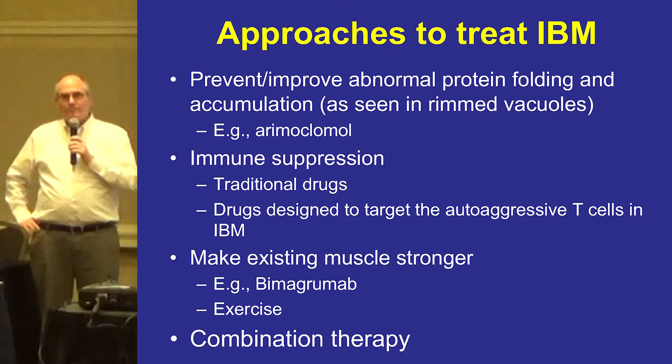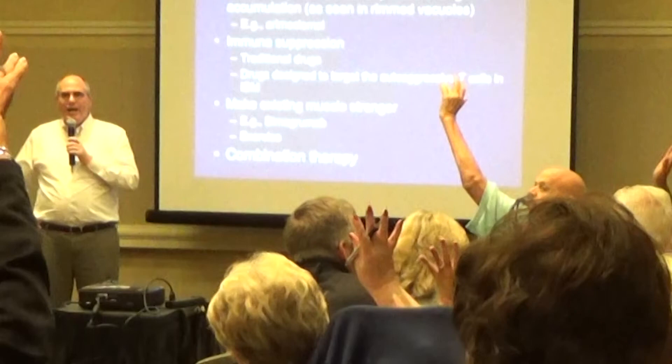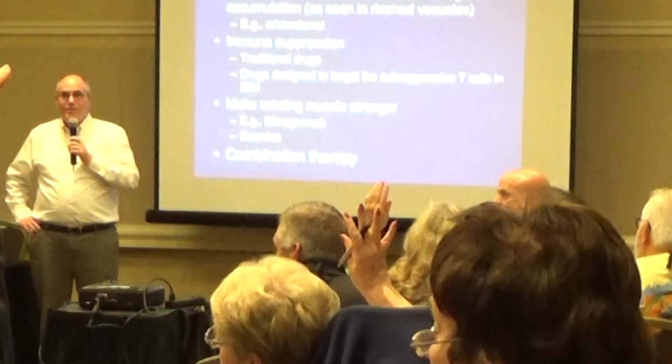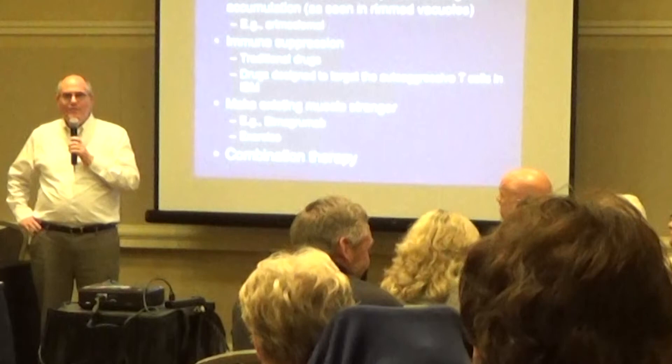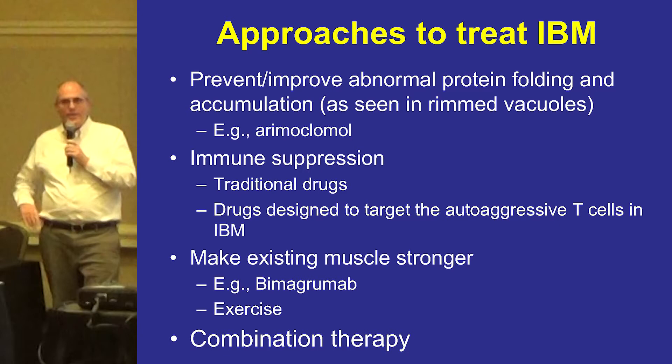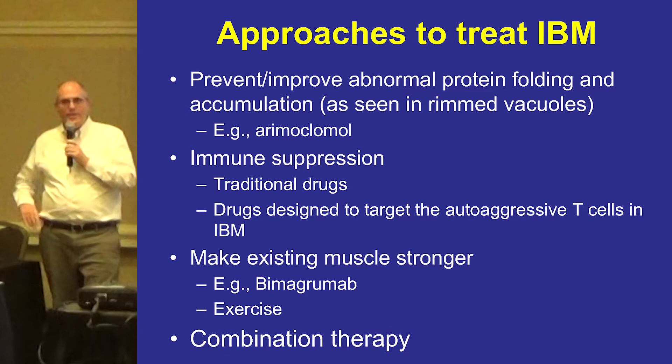IBM is more prevalent in males than females, which is unusual. Most autoimmune diseases are much more common in women — dermatomyositis is about 70–75% women. IBM is the other way around. The only other autoimmune disease I can think of where more men than women are affected is ankylosing spondylitis. This sex distribution is something in the column for IBM being a degenerative rather than autoimmune disease.